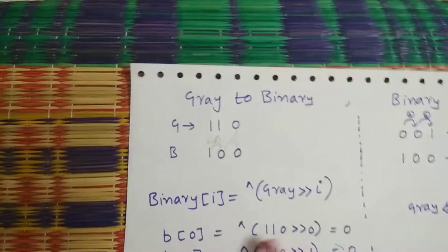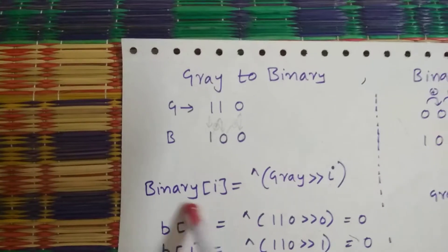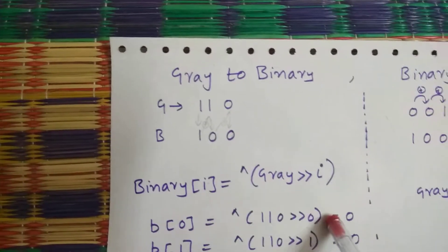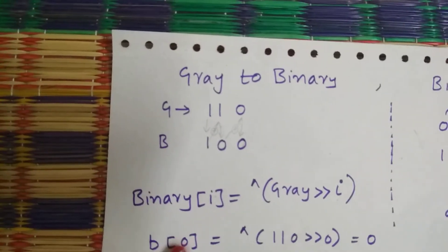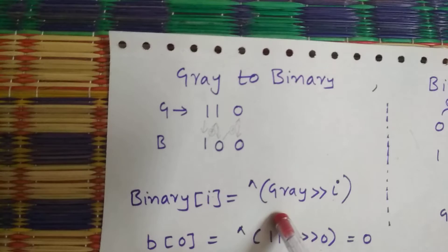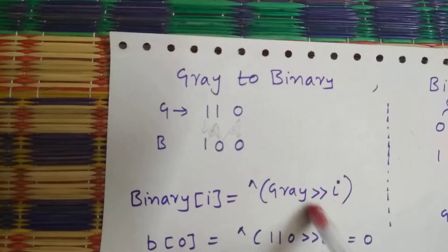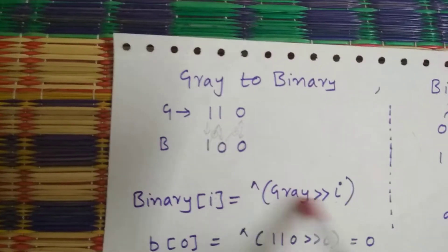So this is how binary is going to work with Gray. I'm going to explain this one. Binary bit reduction operator with Gray code and the shift amount of i.